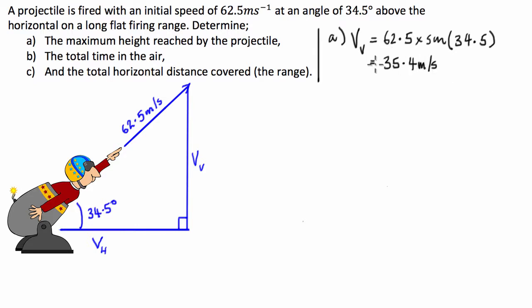and we get a vertical initial velocity of 35.4 meters per second. So from here, what we're going to do is we're going to use the fact that at its maximum height, the velocity is equal to zero.